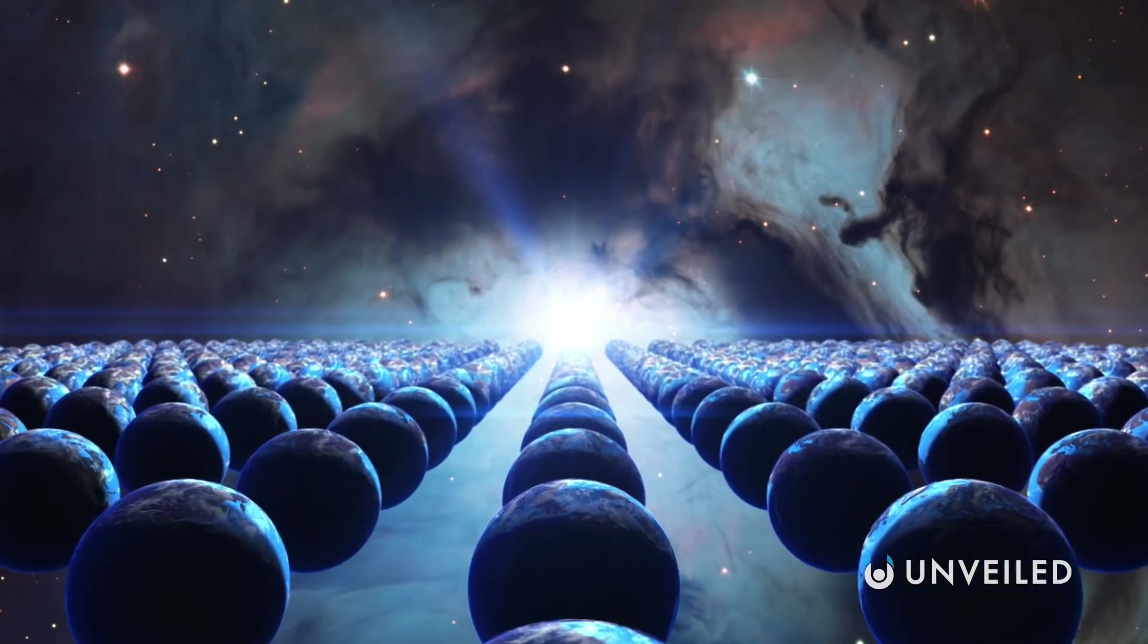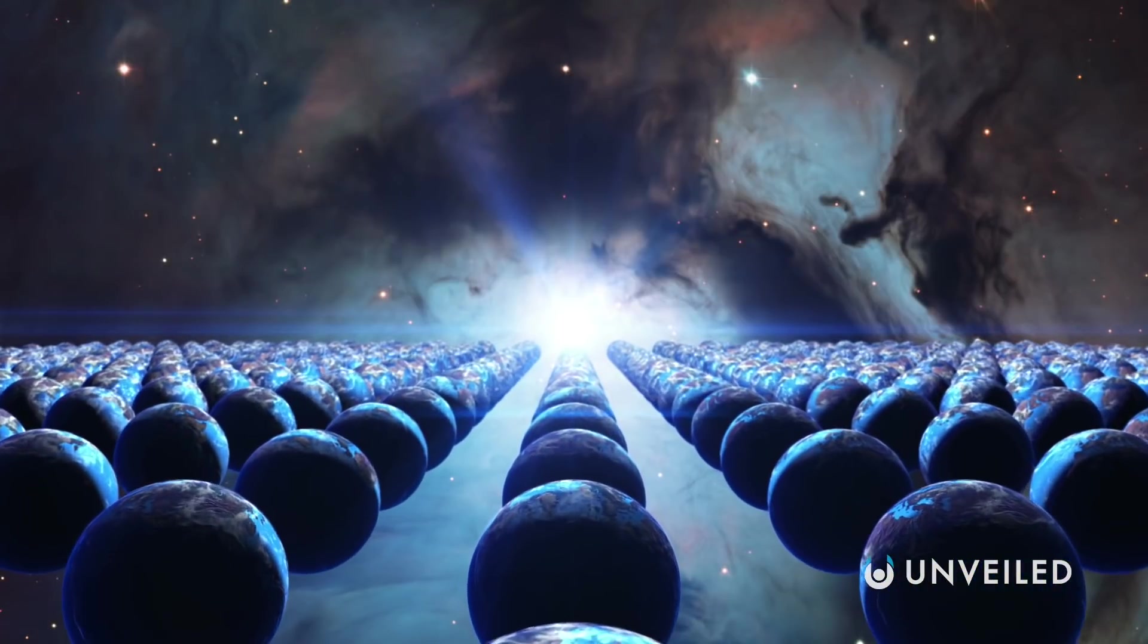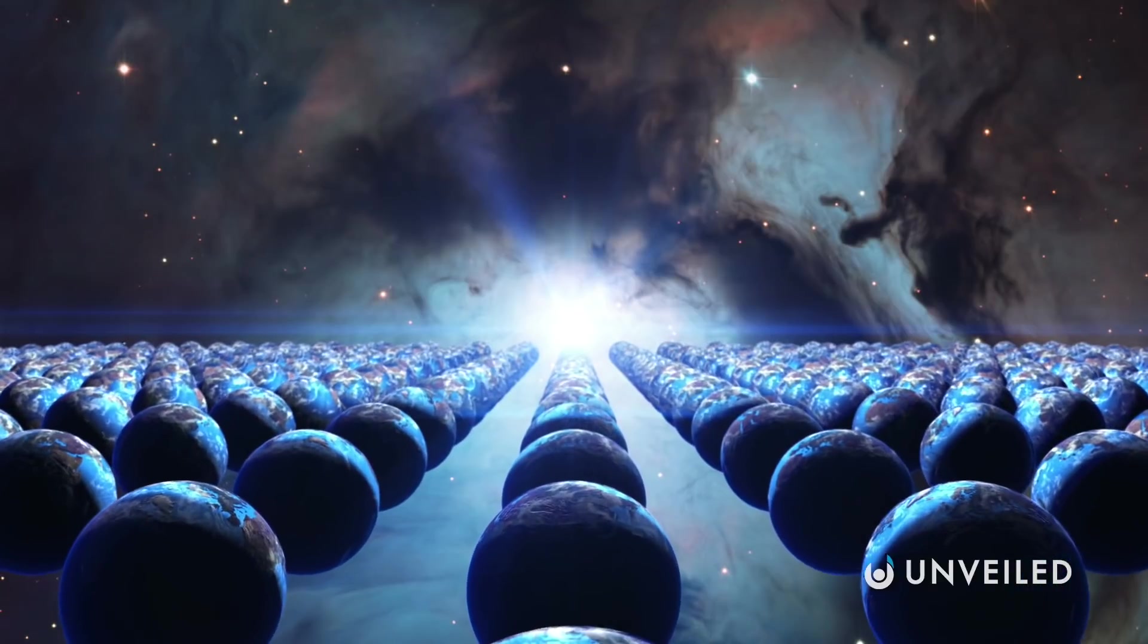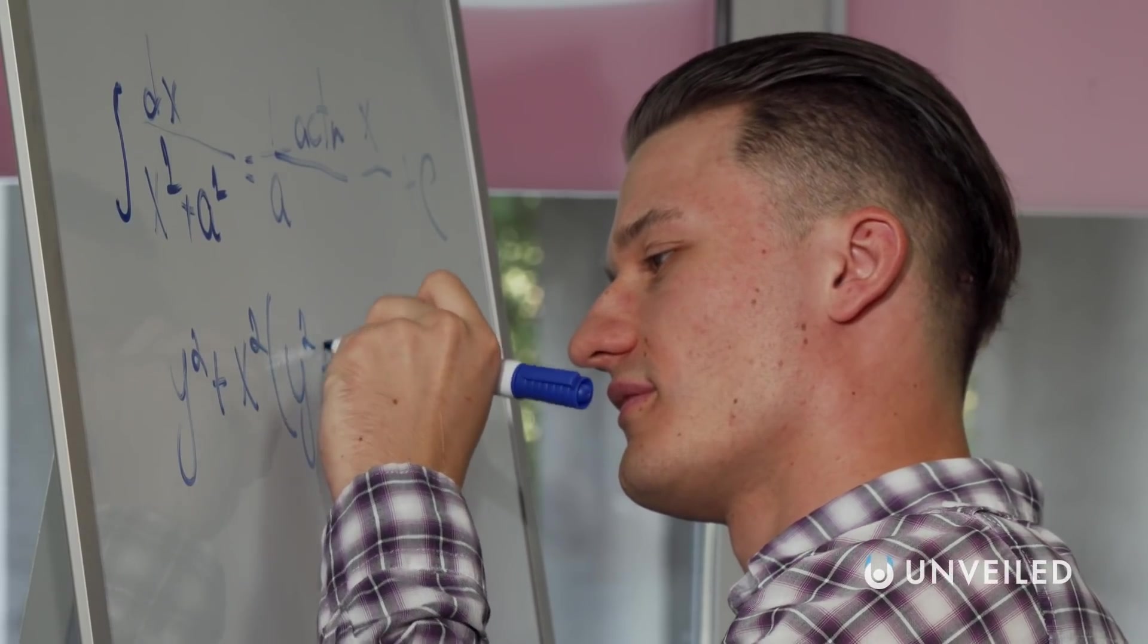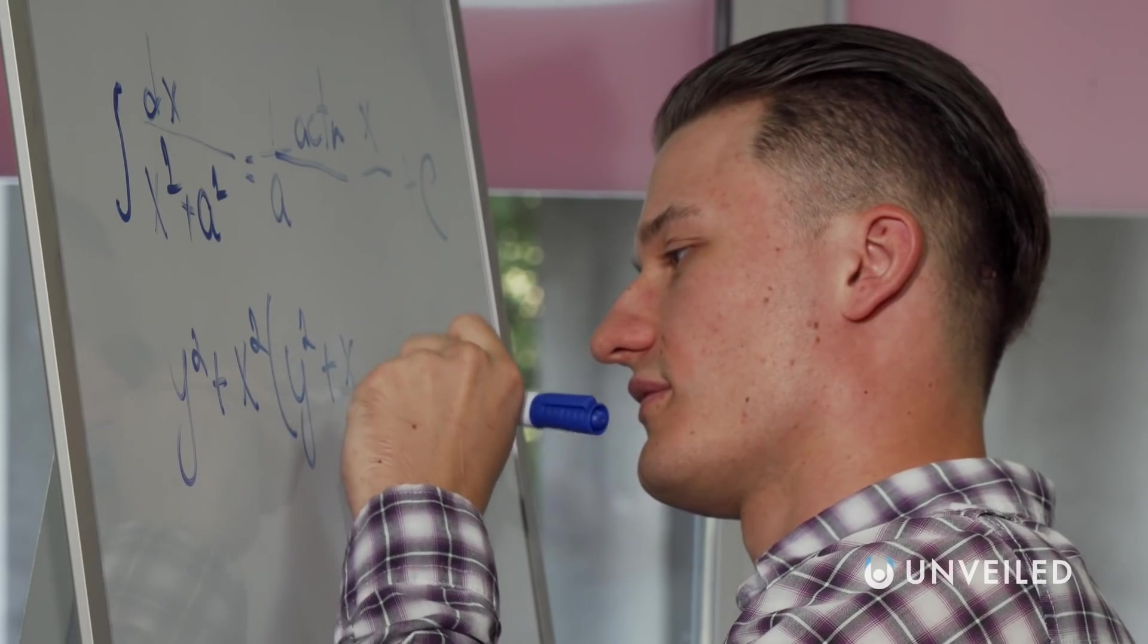It's why so many stories set in a multiverse include different realms and dimensions with totally different physical properties. So, what would happen if we learned how to change our own seemingly immutable laws in the here and now?